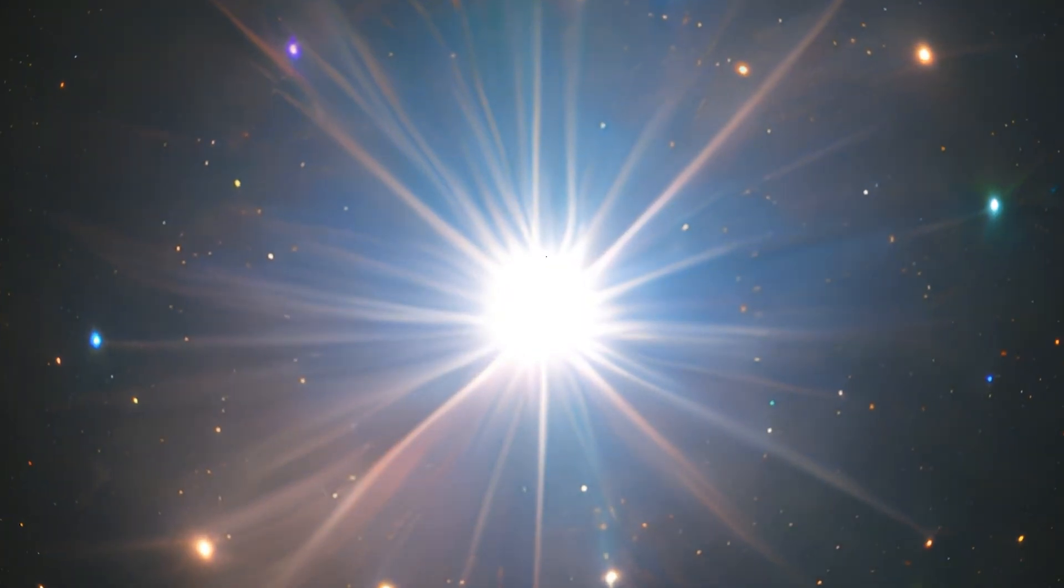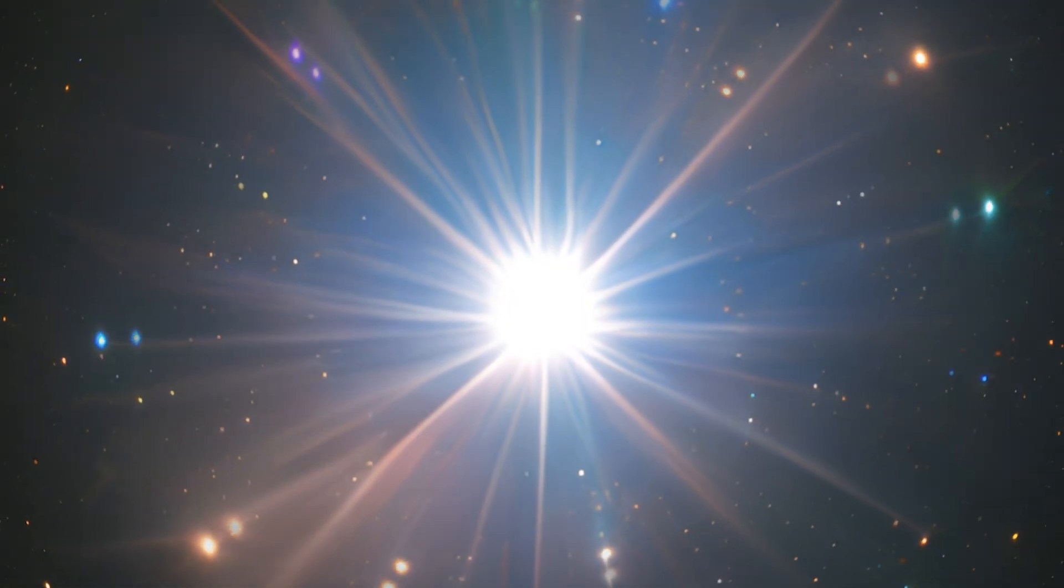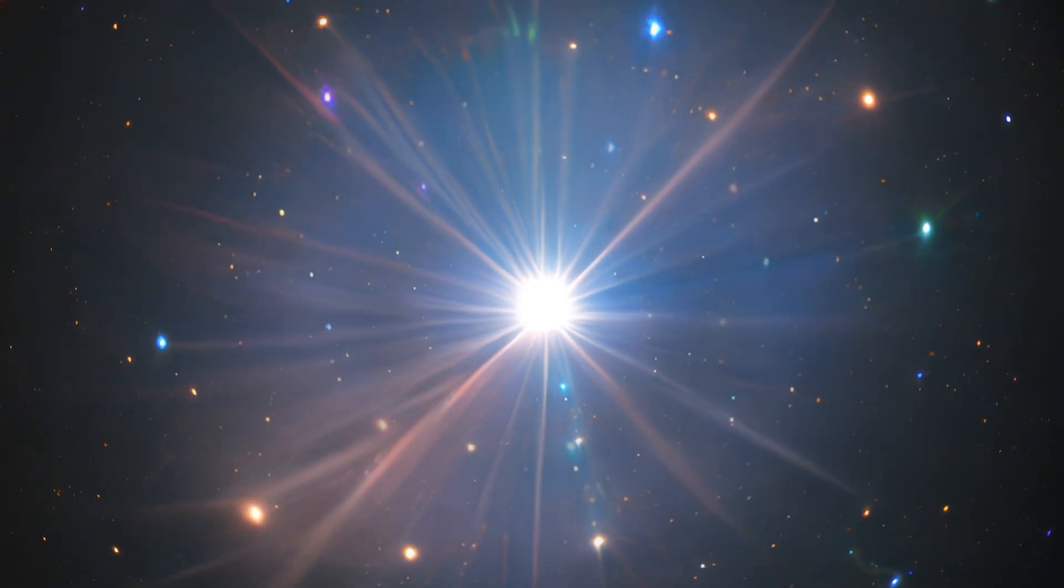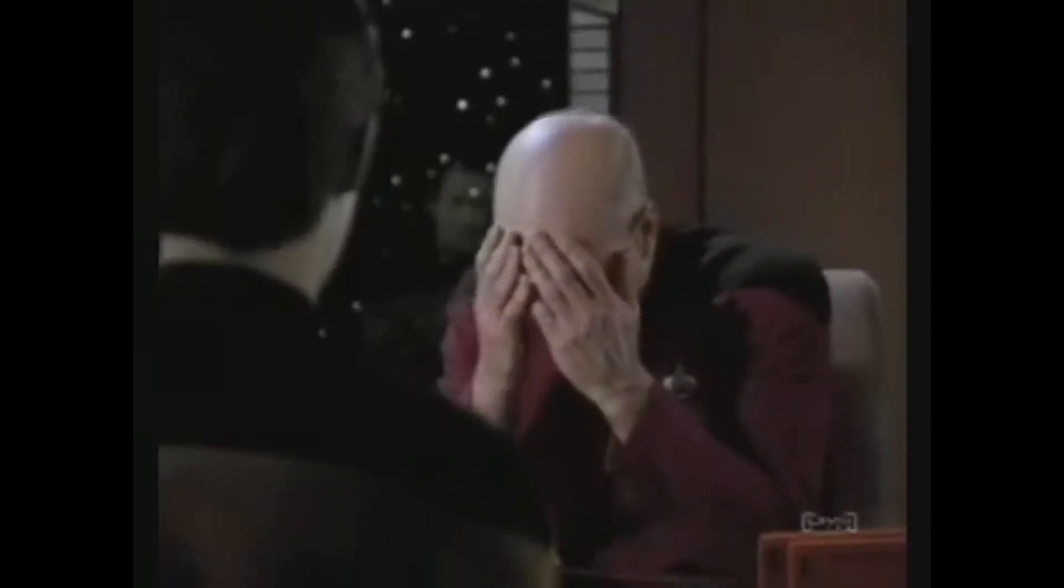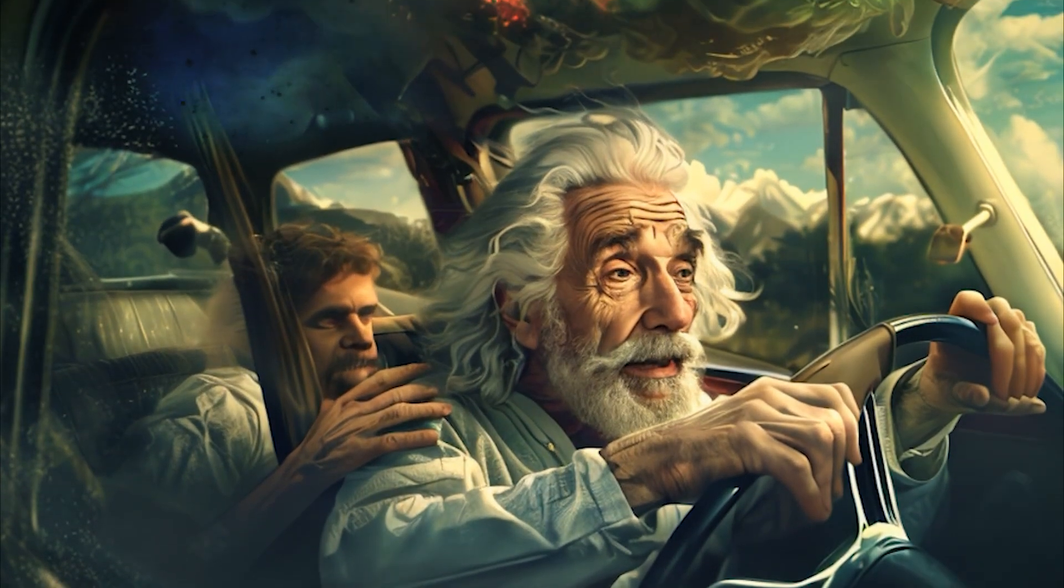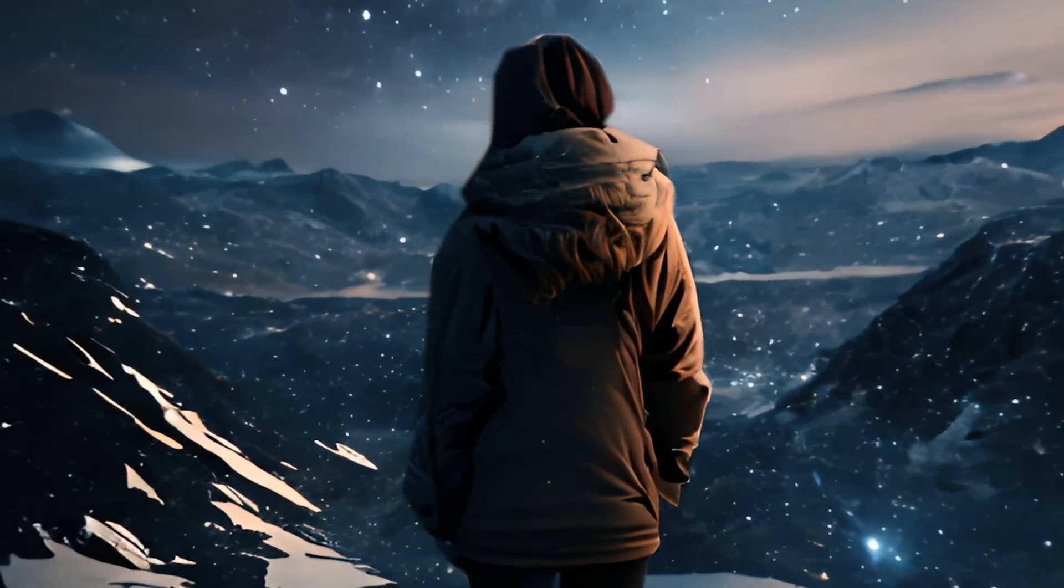Because even at the speed of light, the very nearest star is just over four years away. But just when it seems like all hope is lost, Einstein takes the wheel. Nothing in the math says you can't move faster than the speed of light by moving the universe around you.